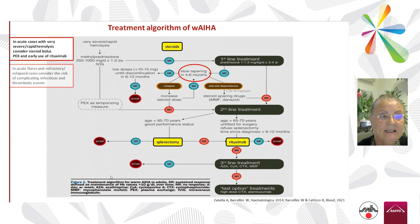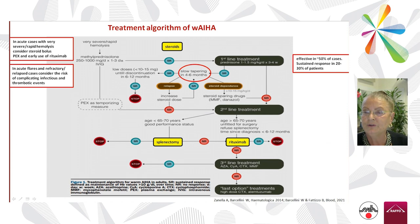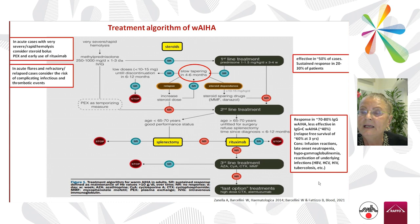This is the classic algorithm for warm autoimmune hemolytic anemia. Steroids represent the first line. In acute and very severe cases, steroids should be given generously with bolus doses, and also plasma exchange. Early use of a second line is advised. Steroid therapy is effective in roughly 50% of cases, but sustained response is present in only about 30%.